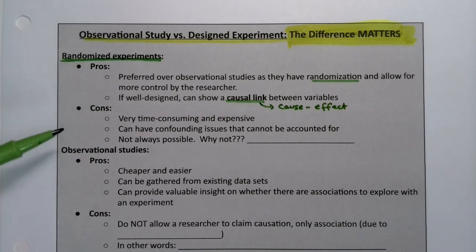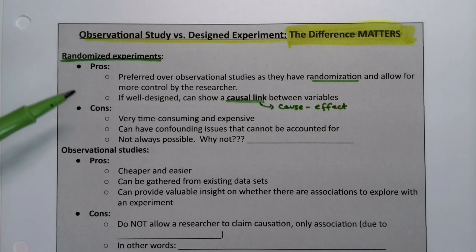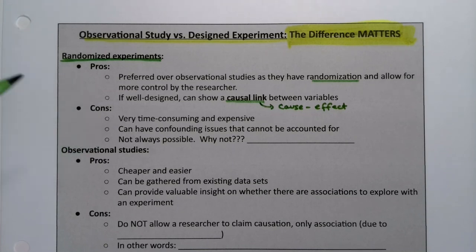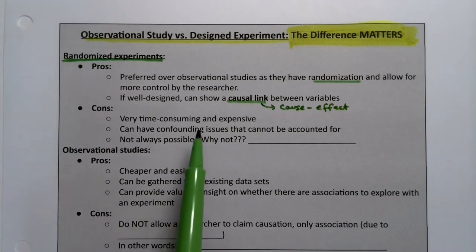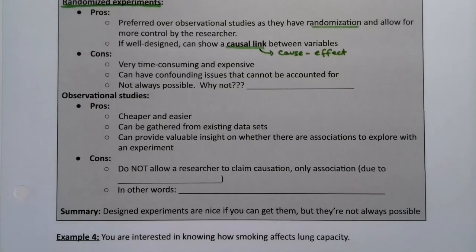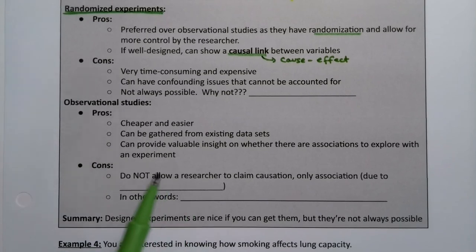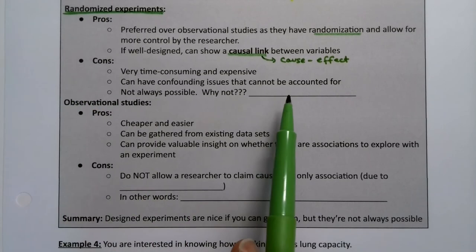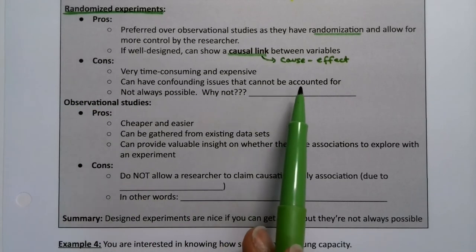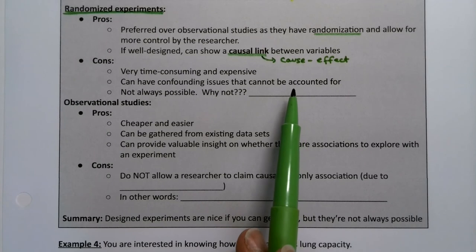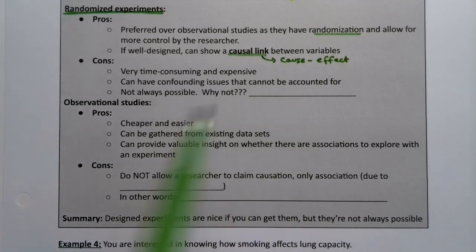What does it have against it? Why don't we just do these all the time? Well, because they're crazy time-consuming and expensive — hella expensive. They can also have confounding issues. Just because they are experiments doesn't mean that confounding will not be there, because confounding can still exist.